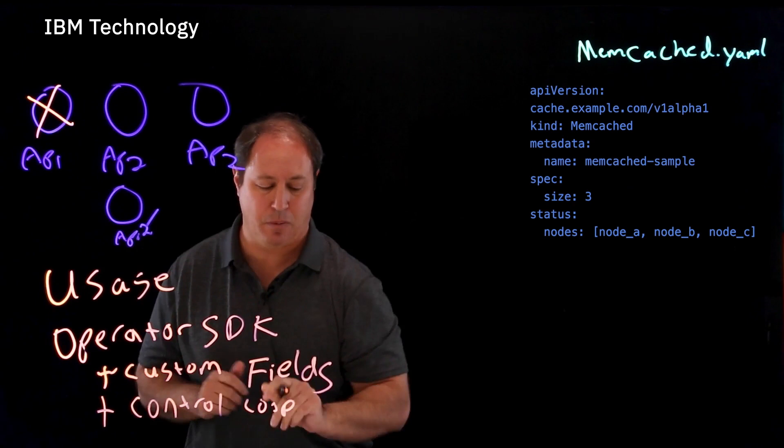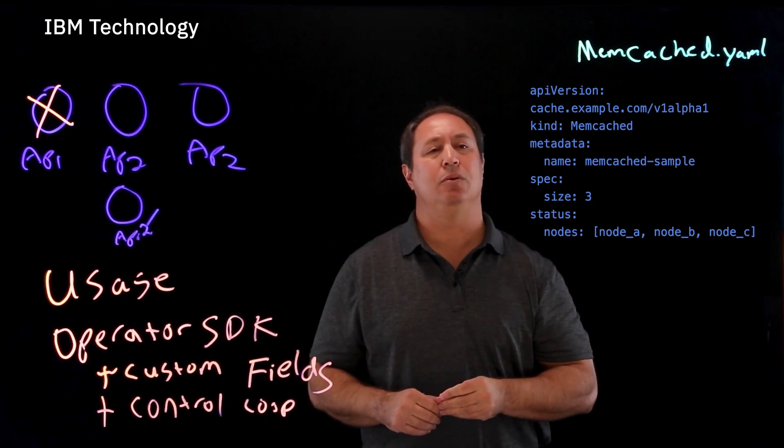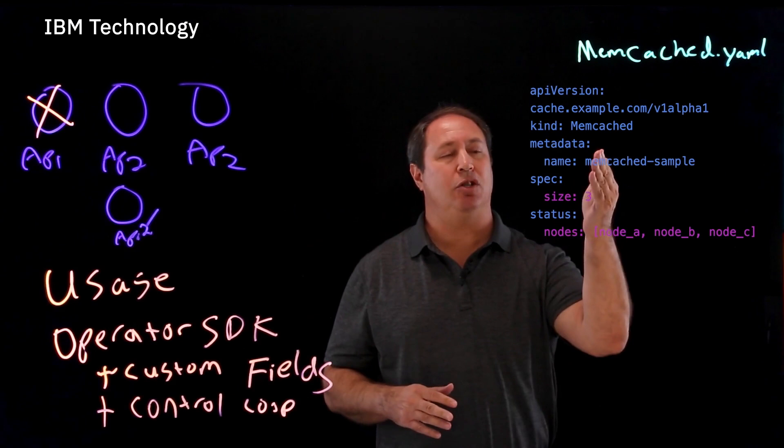So first, let's talk about custom fields. We've got this example over here, two custom fields. One is size and one is nodes. One is in the spec section and one is in the status section.